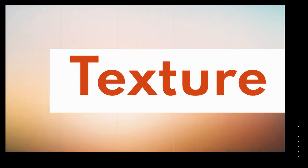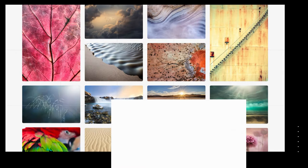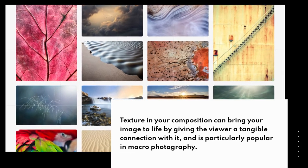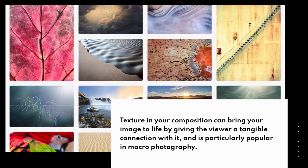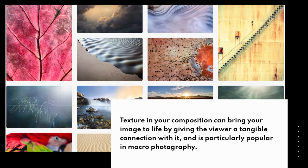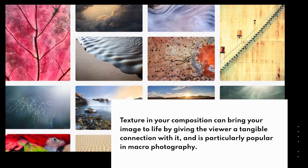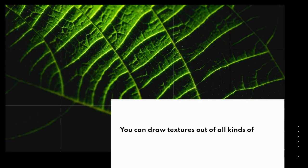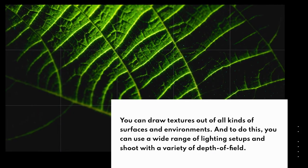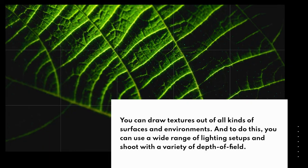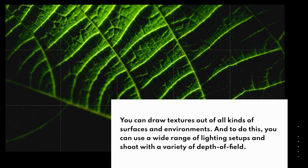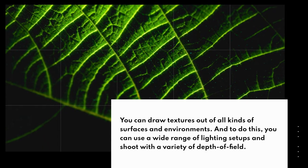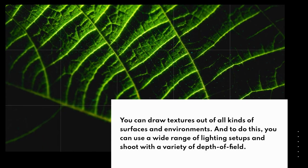Texture. Texture in your composition can bring your image to life by giving the viewer a tangible connection with it, and is particularly popular in macro photography. You can draw textures out of all kinds of surfaces and environments. To do this, you can use a wide range of lighting setups and shoot with a variety of depths of field.